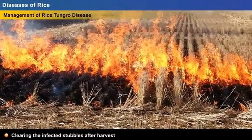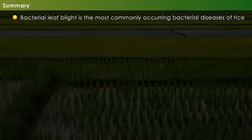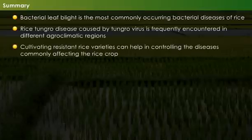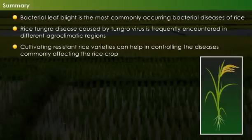Summary: bacterial leaf blight is the most commonly occurring bacterial disease of rice. Rice tungro disease, caused by the tungro virus, is frequently encountered in different agroclimatic regions. Cultivating resistant rice varieties can help in controlling the diseases commonly affecting rice.